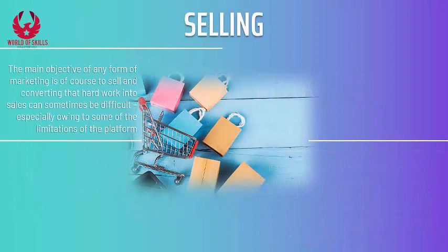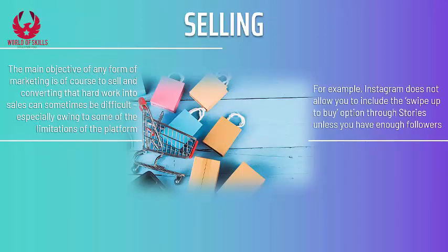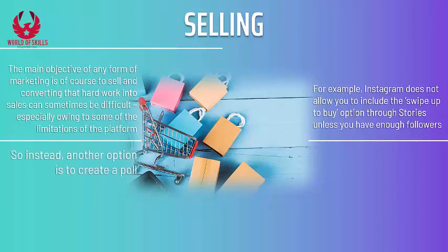Selling: the principal goal of any type of marketing is obviously to sell. Converting that hard work into deals can sometimes be difficult, particularly due to some of the limitations of the platform. For instance, Instagram doesn't allow you to include the swipe-up-to-buy option through stories unless you have a sufficient number of followers. You can choose to use Snapchat instead as that does include a link, but that reaches a much smaller and younger audience.